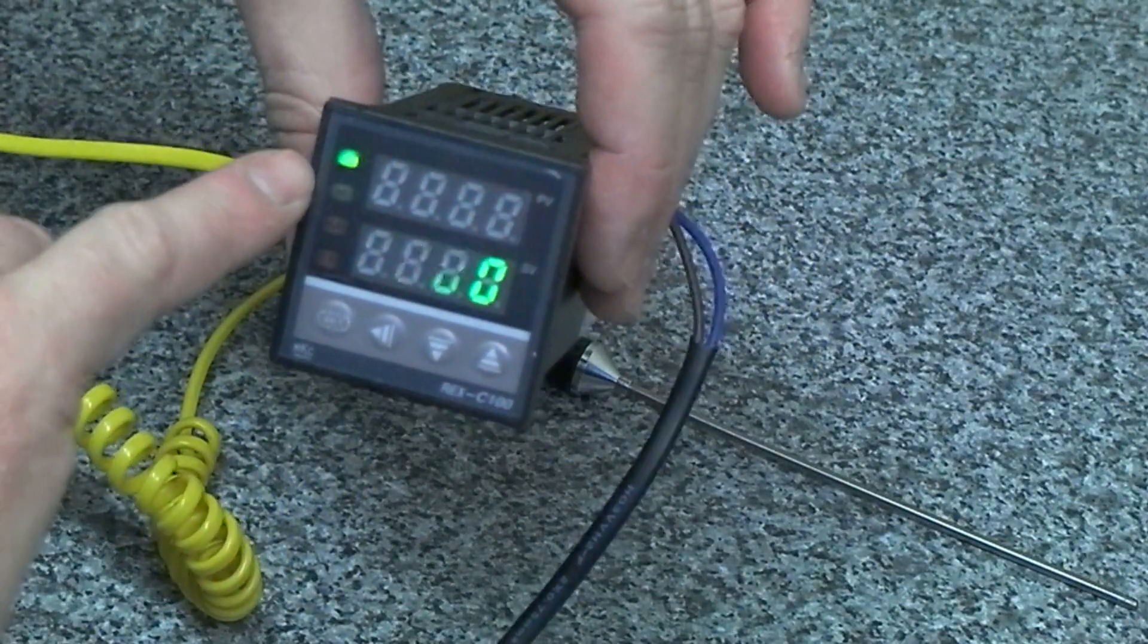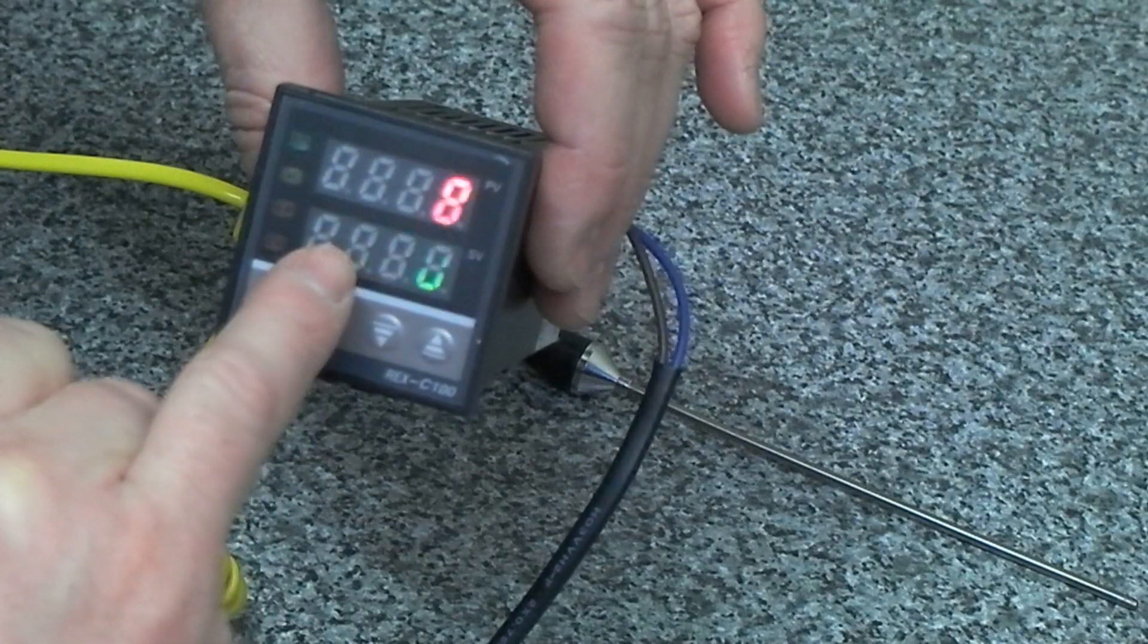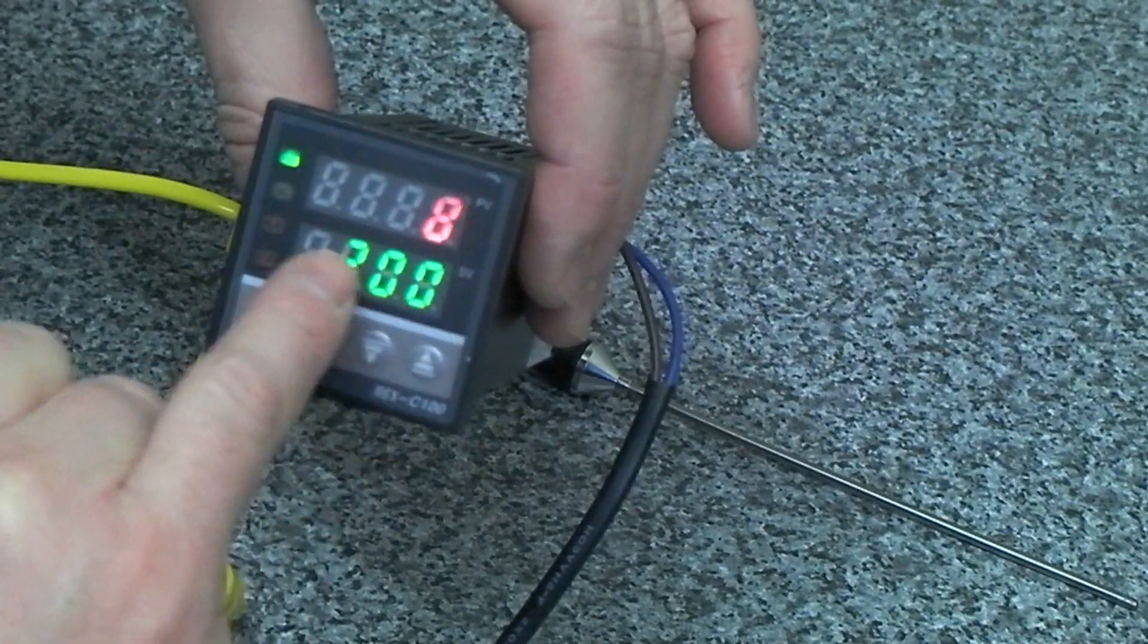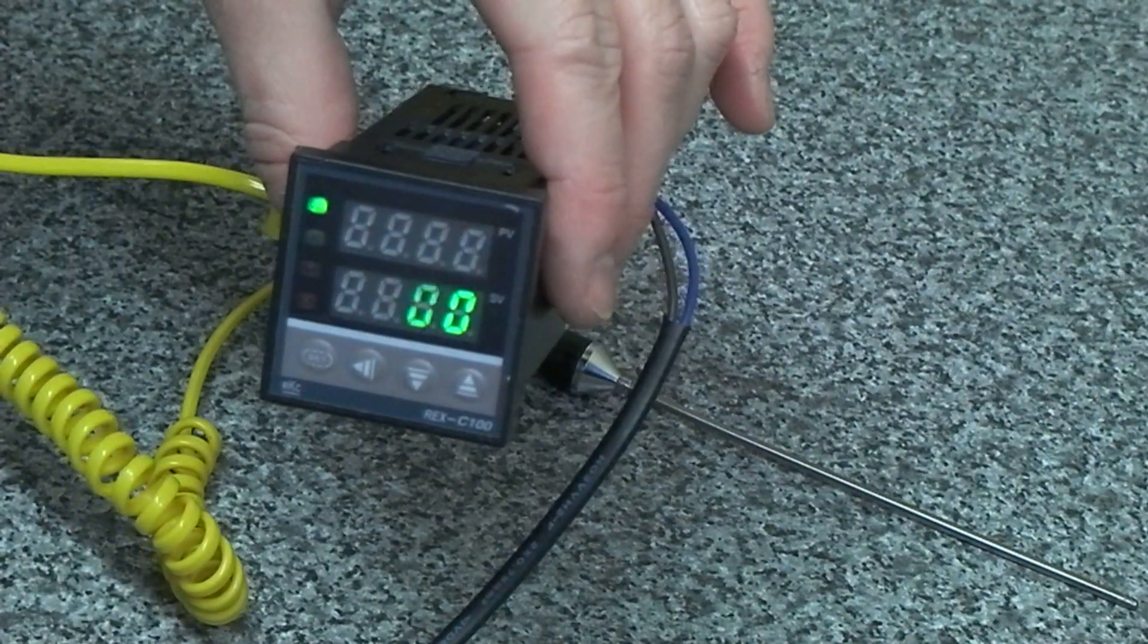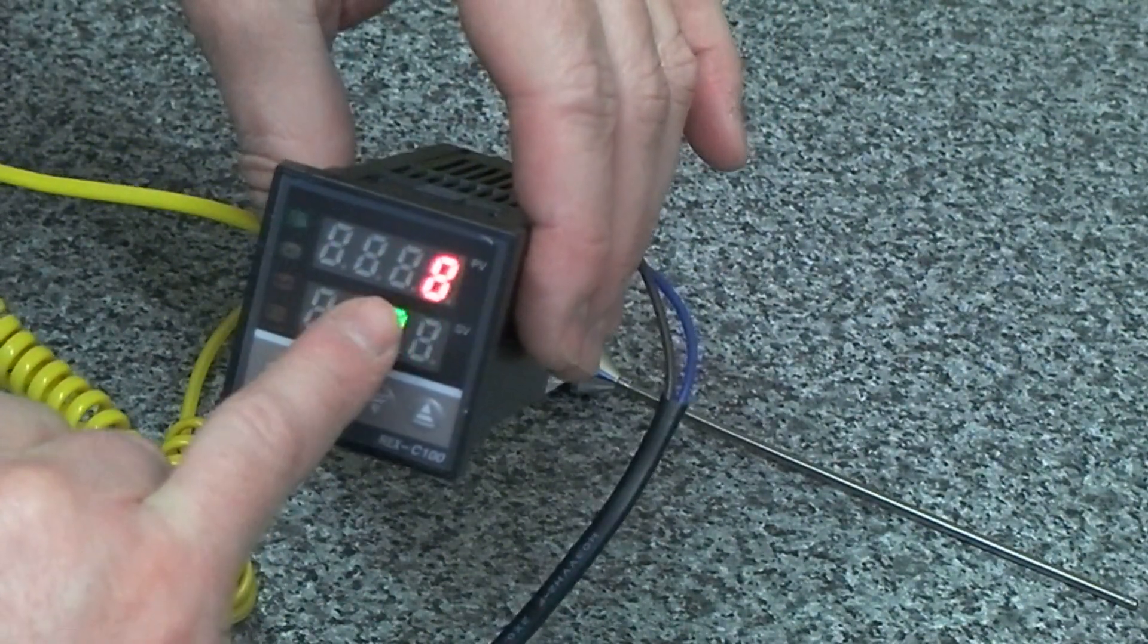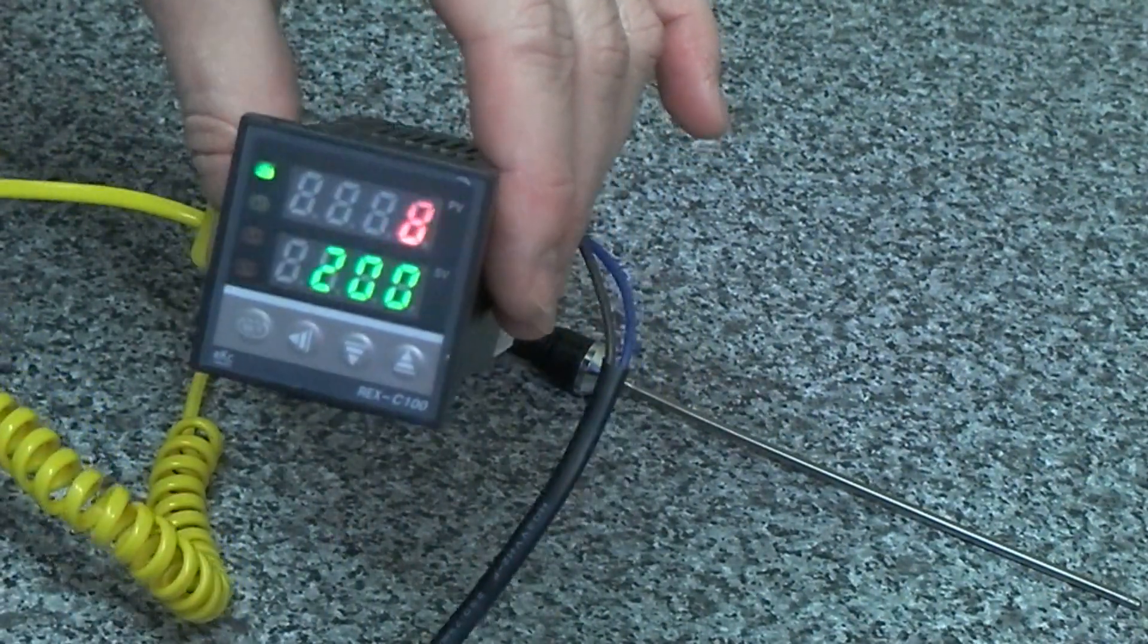This is the set temperature, put at 200, I hope you can see this. Then you've got the process value which is whatever the thermocouple is picking up, and that's saying eight degrees.